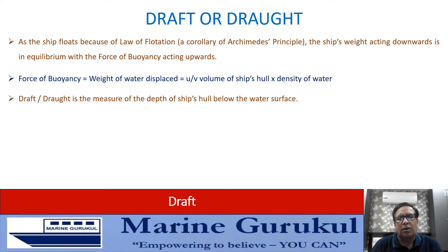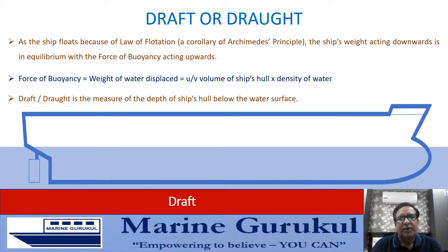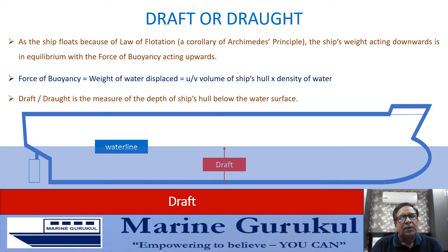As you can see in this diagram, we have the waterline shown by the blue water. The depth of the ship's hull below the waterline is what is called the draft of the ship.